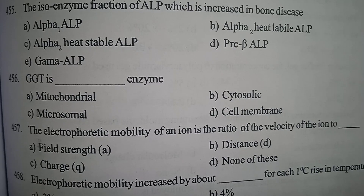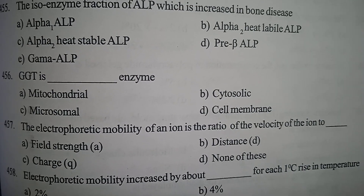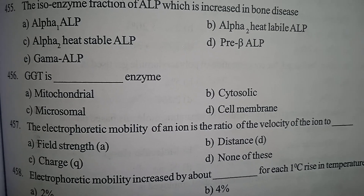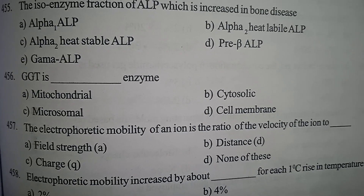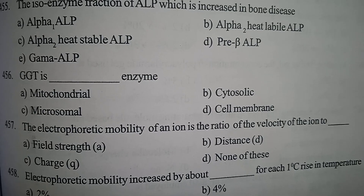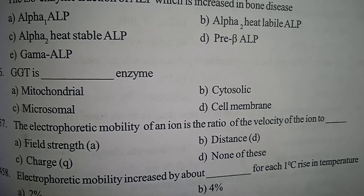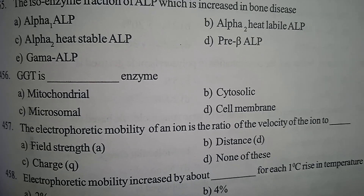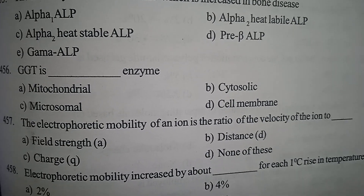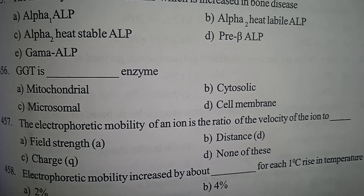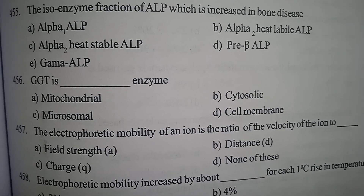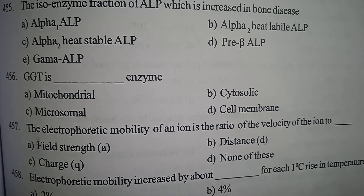Question 12: The electrophoretic mobility of an ion is the ratio of the velocity of the ion to — Option A: Field strength, Option B: Distance, Option C: Charge, Option D: None of these. Correct answer: Option C, Charge.